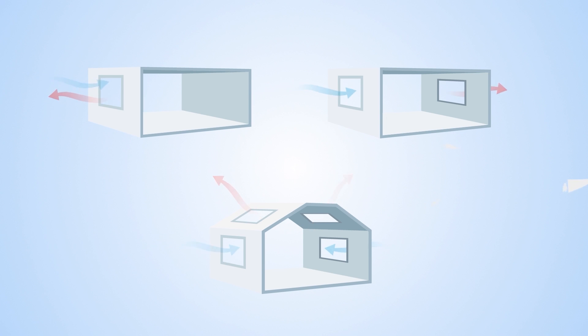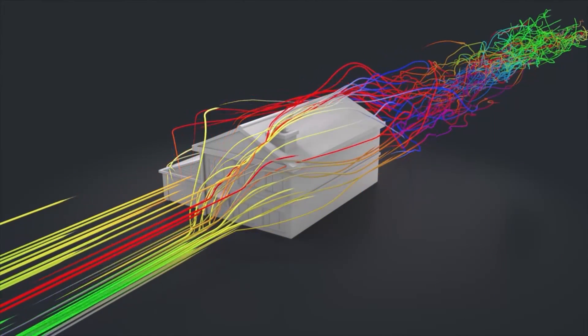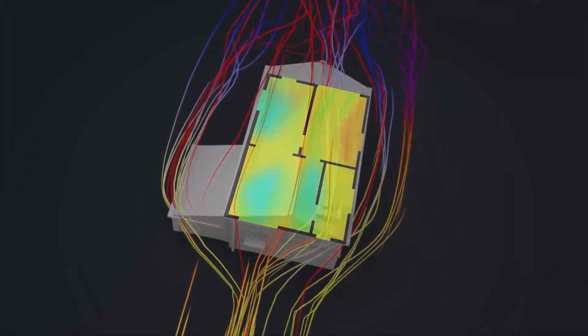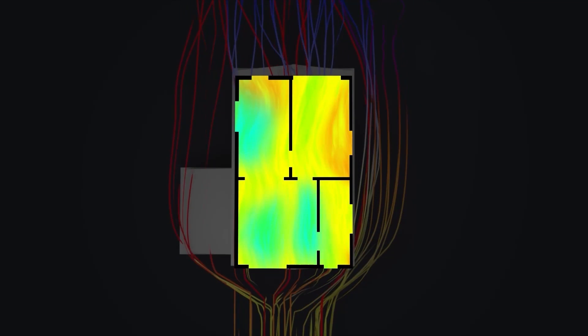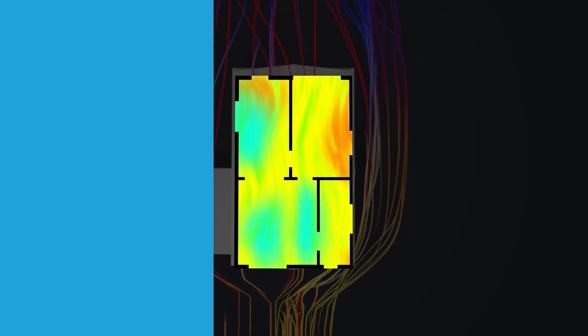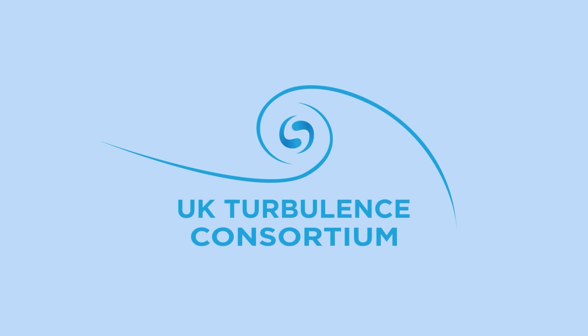Turbulent flows play an important role in heat management. Heat transfer is directly linked to fluid dynamics. By considering energy conservation, researchers can calculate heat transfer within a system. This is one of many reasons the UKTC is conducting research into turbulence using supercomputers.